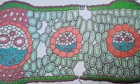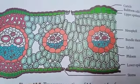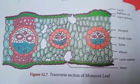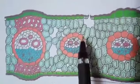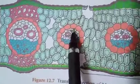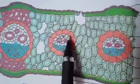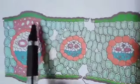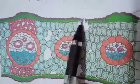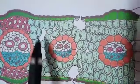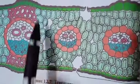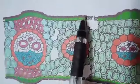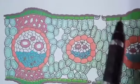This is the internal structure of a monocot leaf or isobilateral leaf. The transverse section of a monocot leaf shows the following structures: upper epidermis, lower epidermis, mesophyll tissue, and vascular bundles. Epidermis is present on both sides. In monocot leaf, both upper and lower epidermis are made up of parenchyma cells.